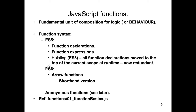In ES6 and beyond, we still have function declarations and function expressions. We also have a new way of declaring a function called an arrow function, and there's actually a shorthand version of that - you'll see me using arrow functions quite a lot. Finally, from day one we also have anonymous functions. An anonymous function is a function that doesn't have a name, which may seem odd, but we actually use them quite a lot.